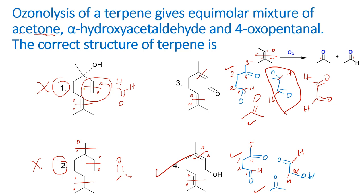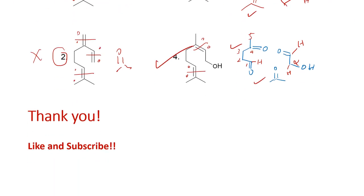This is how we solve the problem. When dealing with ozonolysis, look for the double bonds, perform the cleavage, and check the aldehydes or ketones formed against the given options. Thank you — please like and subscribe to our videos.